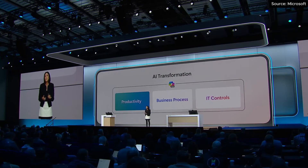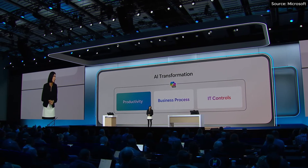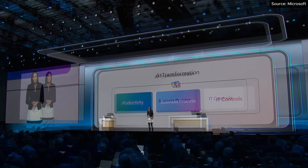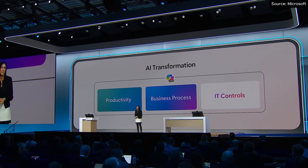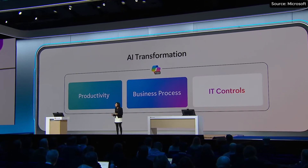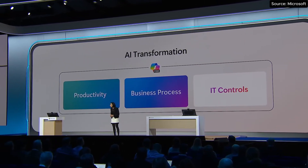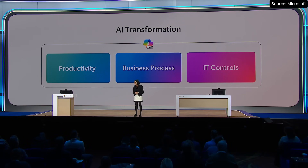And now with GPT-4.0 and enhanced orchestration, we continue to dramatically improve performance. Copilot agents will be directly embedded into your business processes — from the simple, like expense reports, to the complex, like financial reporting. And Copilot has a rich layer of IT controls that helps your organization stay secure and compliant while giving you visibility into the business impact of your AI investments.